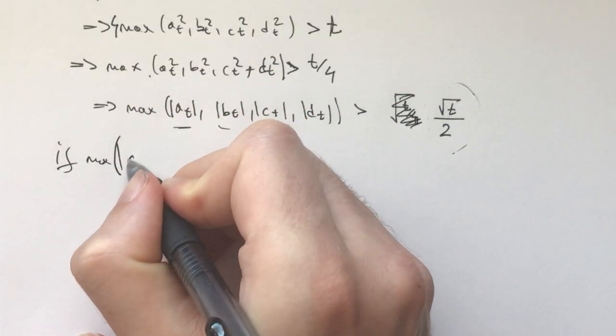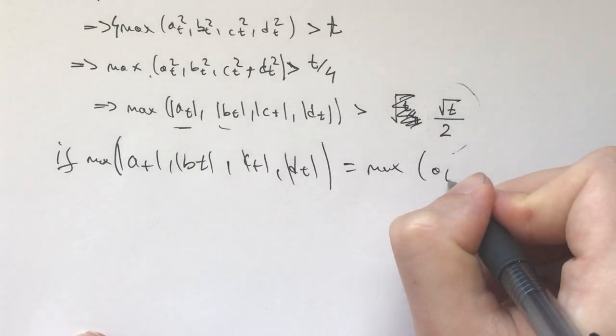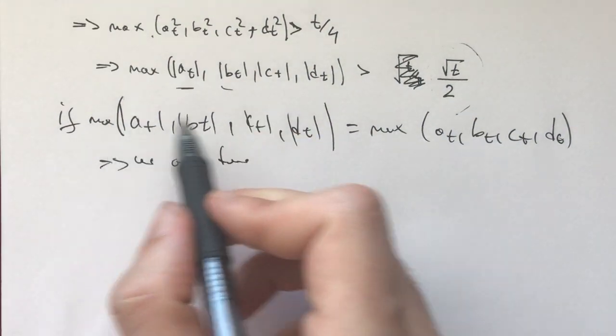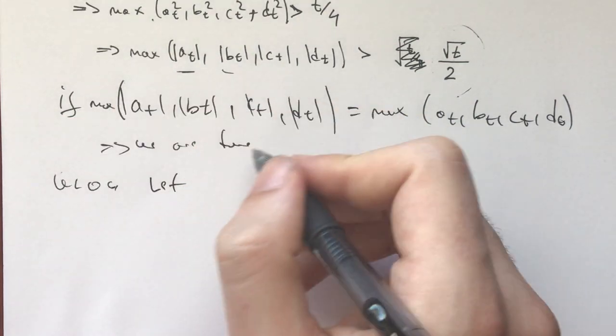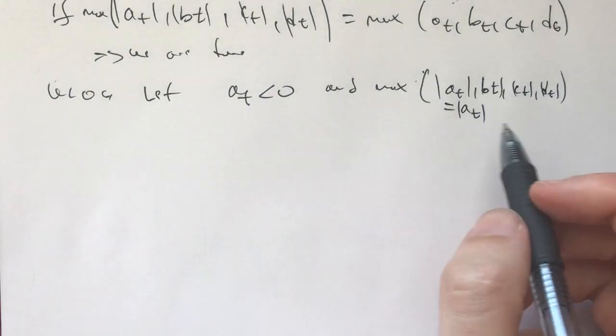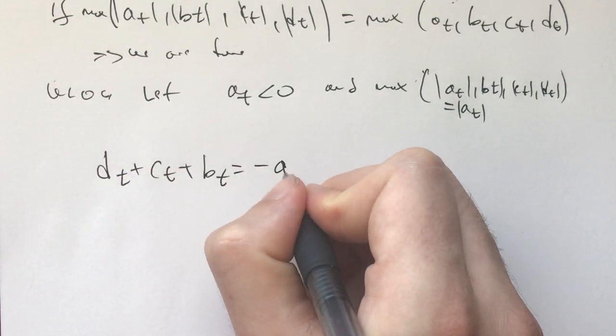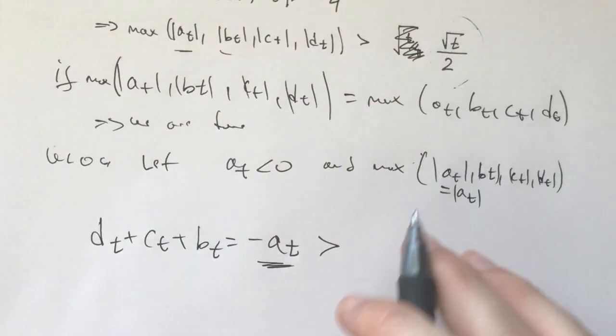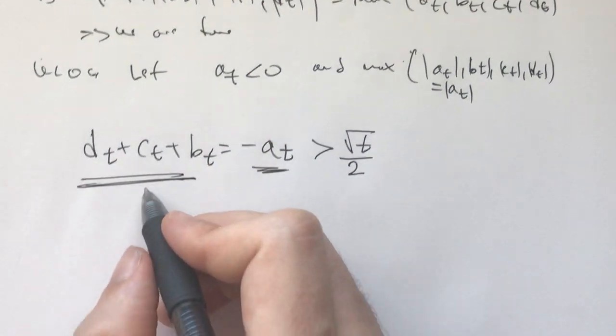How we do that, we say, if max of at, bt, ct, and dt, if this is equal to the max of at, bt, ct, and dt, then we are done. However, if on the other hand, the max of this isn't the one of the max, then let's assume without loss of generality, let at be less than 0 and the max of all of these numbers be equal to at. Then, what we have is from dt plus ct plus bt equals negative at, which now we know, because this negative is the absolute value, we know this negative thing is greater than the square root of t over 2.